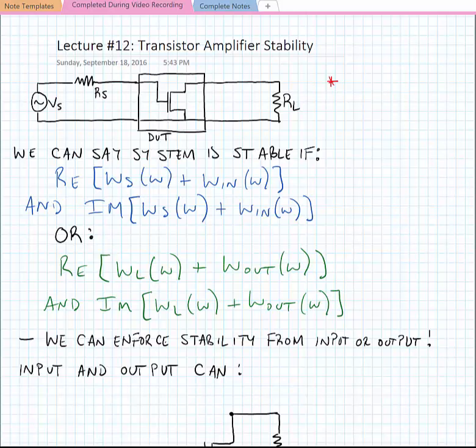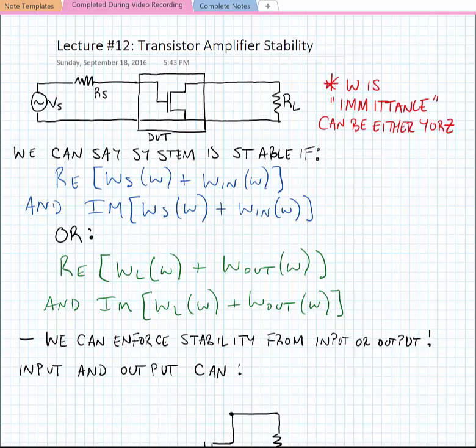We're going to talk about this in terms of what we're going to call W, which is an emittance. Our emittance W can be either a Y or a Z parameter.